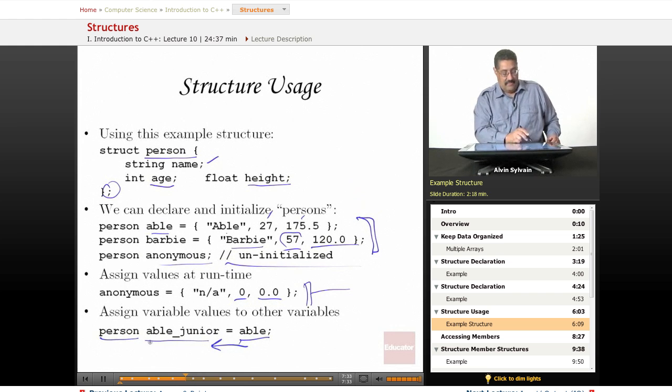We can use it now. When we declare it as a type, this is a variable. We can use it like any other variable, including Abel being assigned to Abel Jr. So we have a person called Abel Jr, and all the members of Abel will be copied to all the members of Abel Jr. Very powerful syntax here.